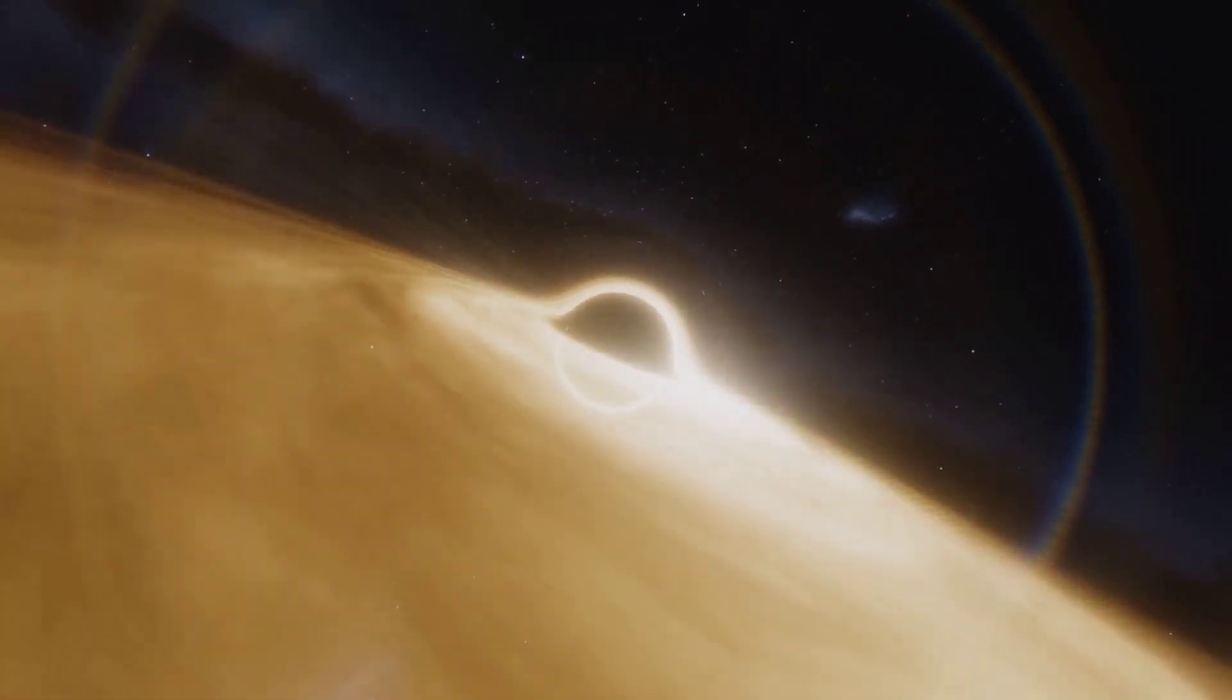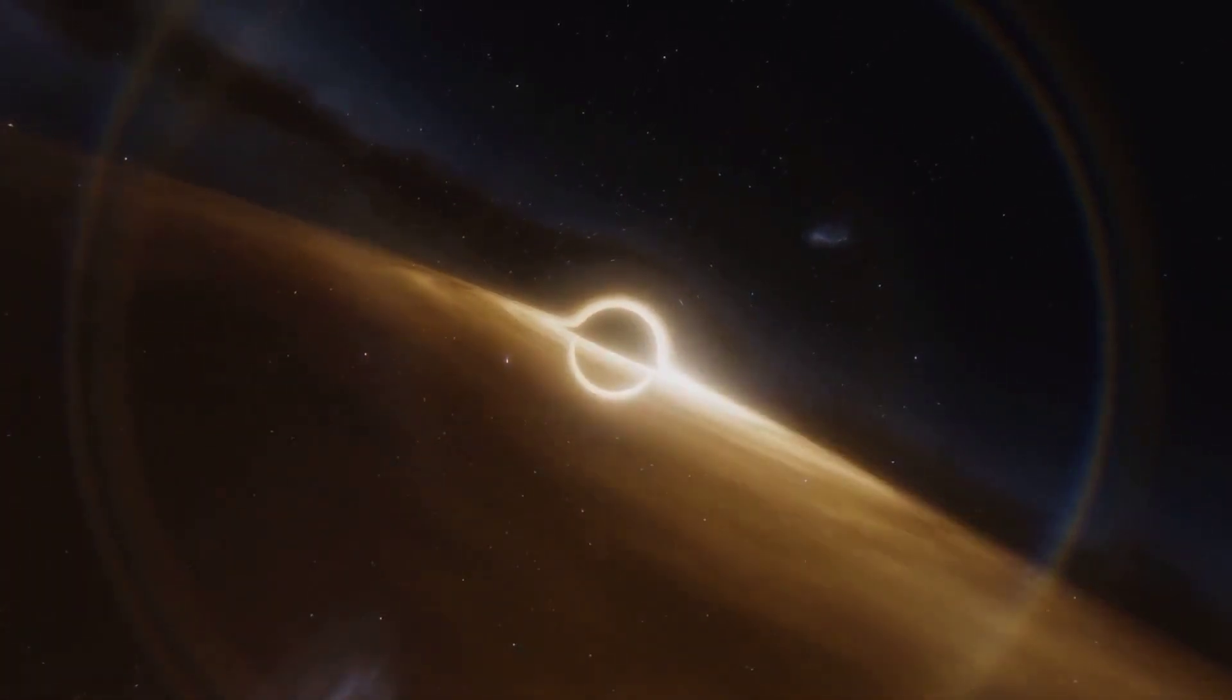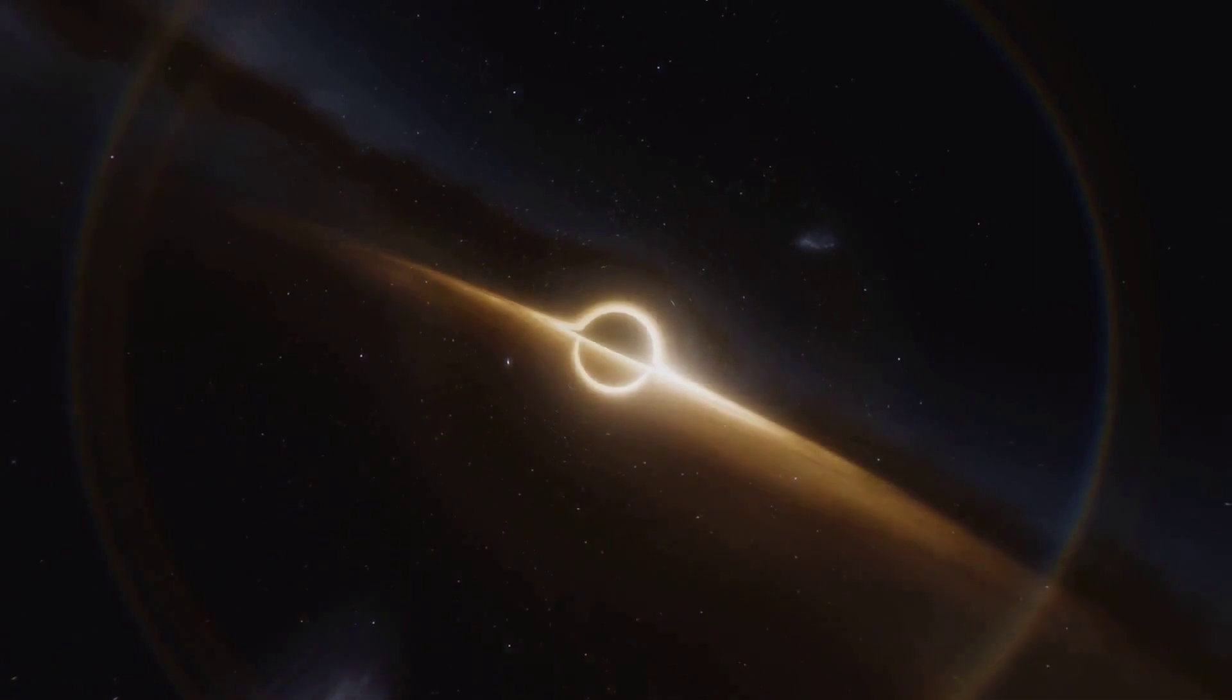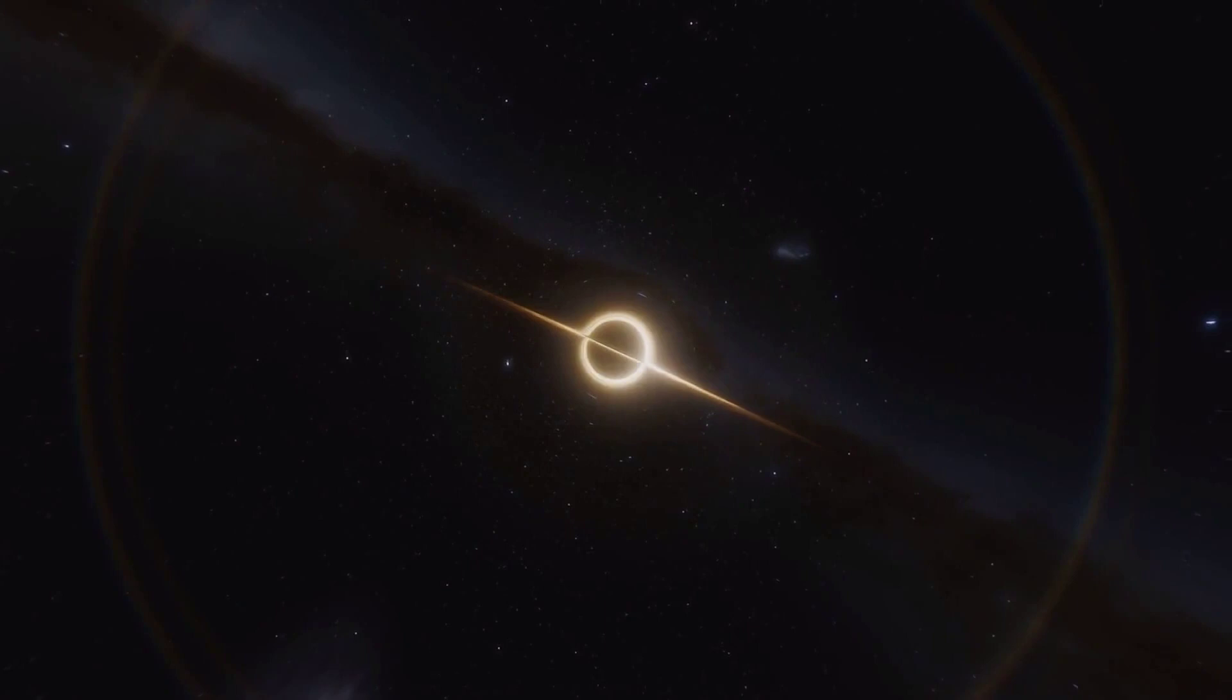At the center, we have the singularity, a point of infinite density. Surrounding it is the event horizon, which is essentially the point of no return. Surrounding it is the ergosphere, a region where objects cannot remain in a fixed position.